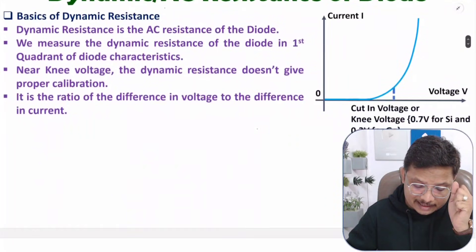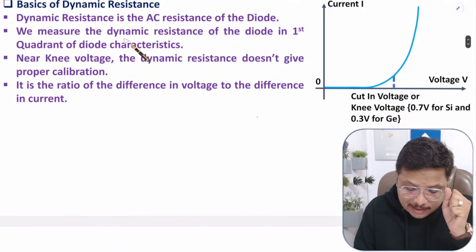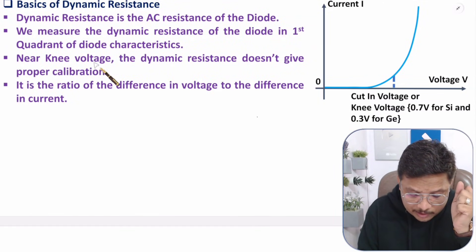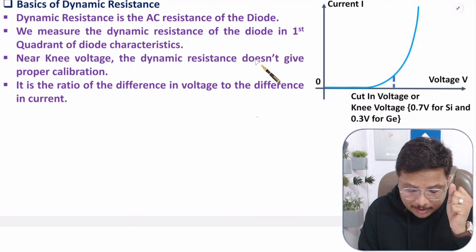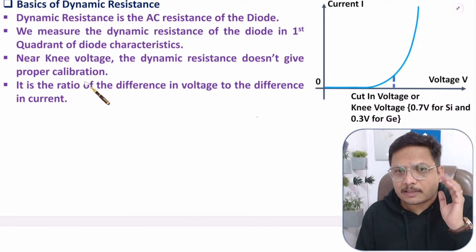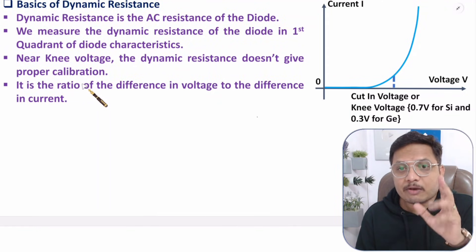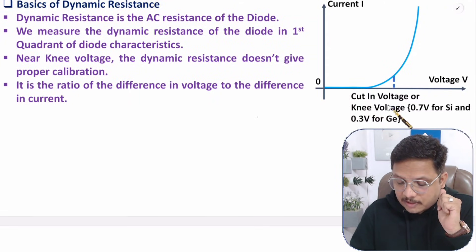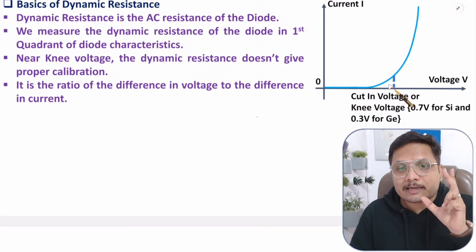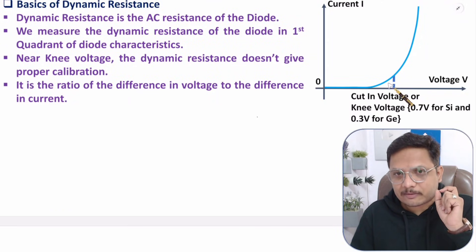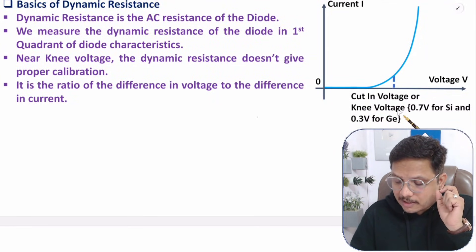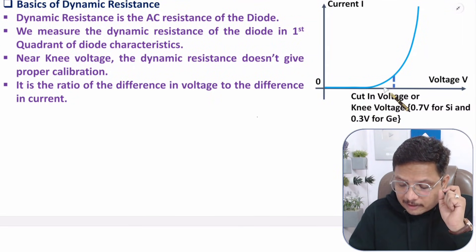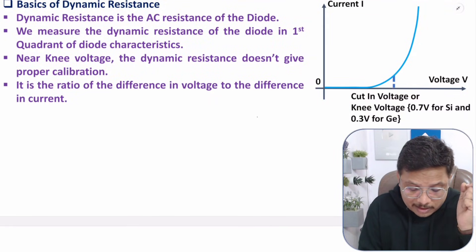Dynamic resistance is usually measured in the first quadrant of the diode characteristic. Near the knee voltage, dynamic resistance doesn't give proper calibration. So whenever you calculate dynamic resistance near the knee voltage, it doesn't give proper calibration. The cut-in voltage or knee voltage is 0.7V for silicon and 0.3V for germanium. Near this region, we should not calibrate dynamic resistance.